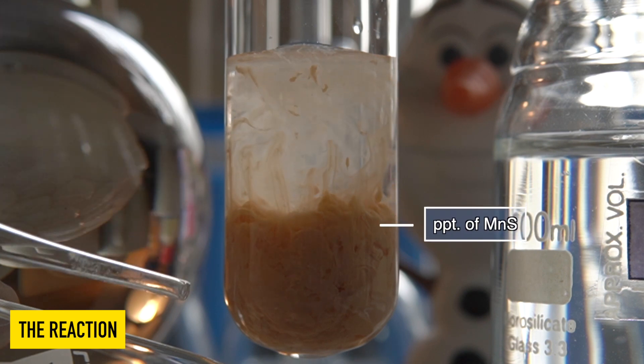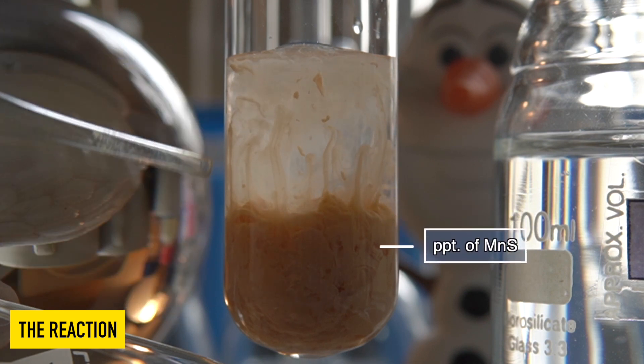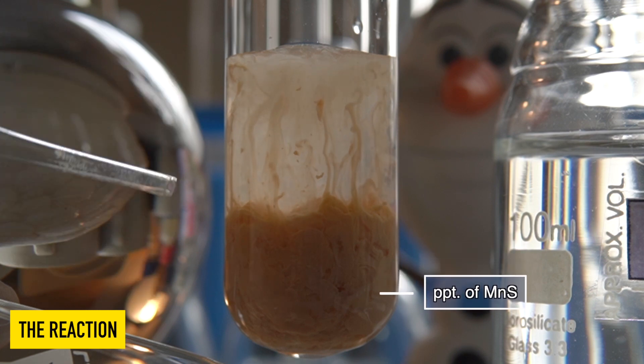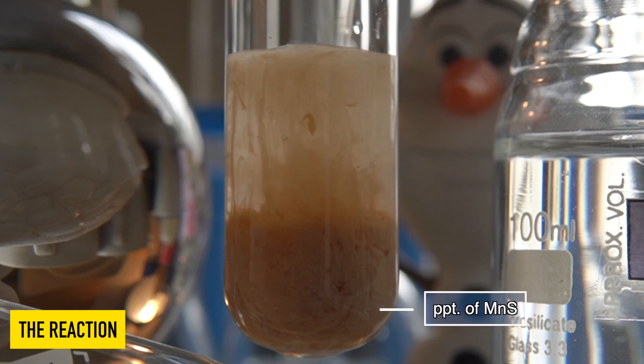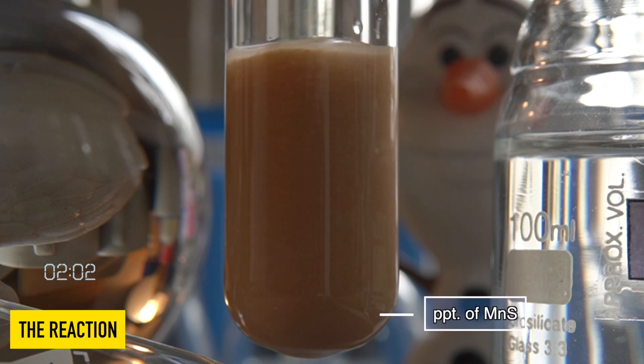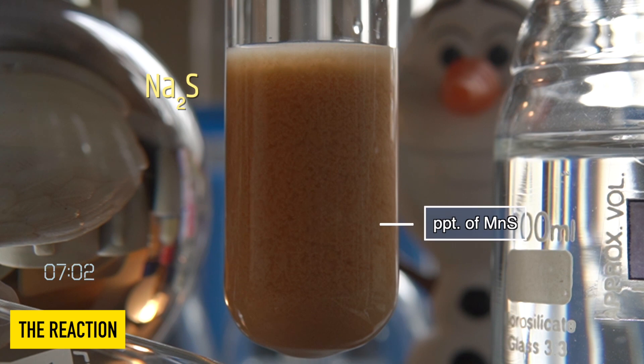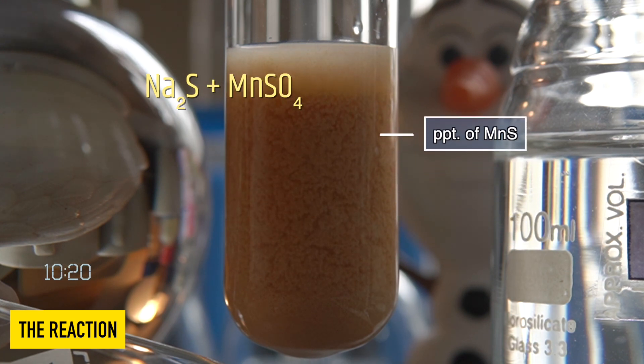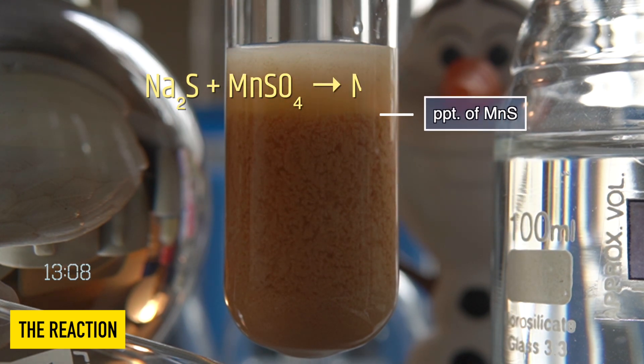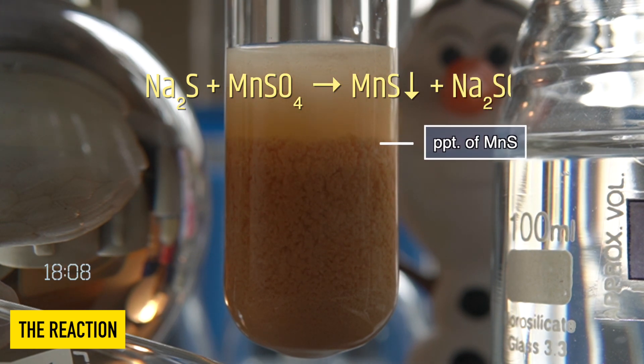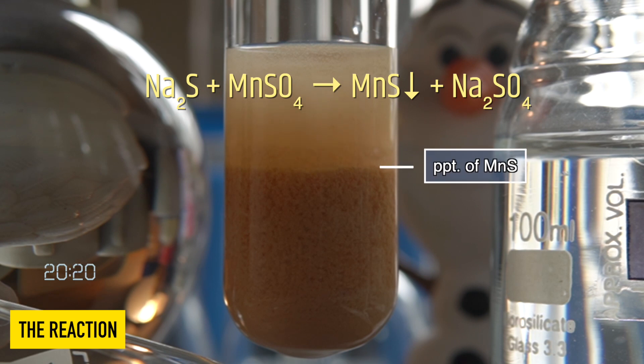The pink insoluble precipitate that has been formed at the bottom of the test tube is nothing but manganese sulfide. So in this reaction, sodium sulfide reacts with manganese sulfate to produce an insoluble precipitate of manganese sulfide along with sodium sulfate.